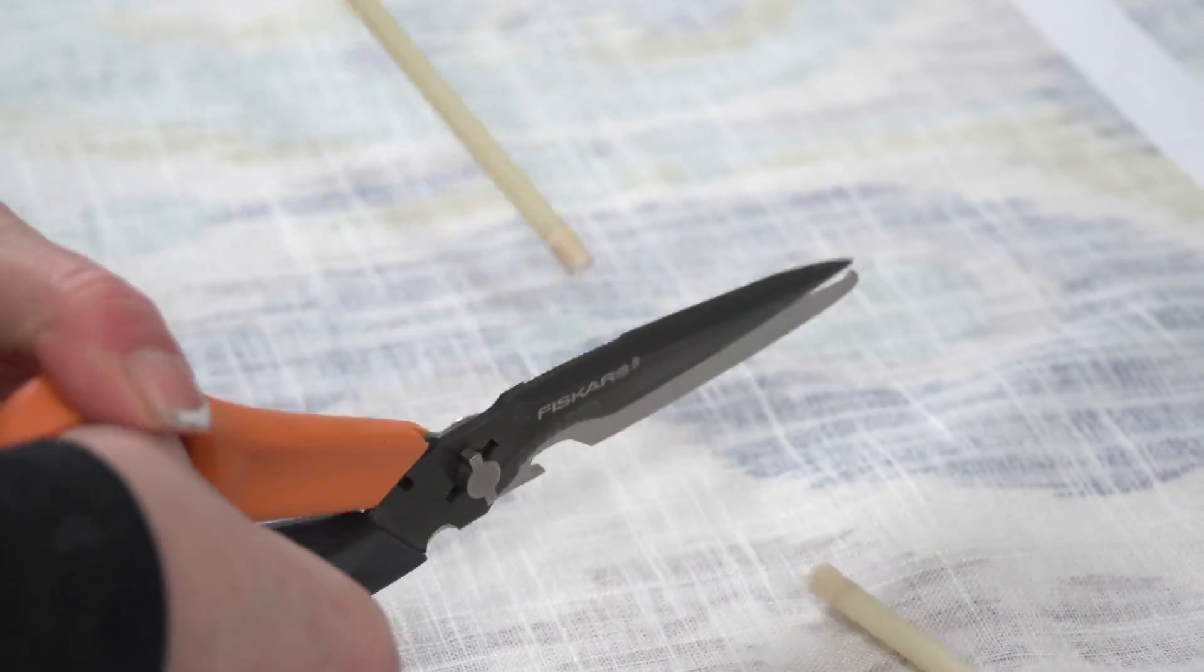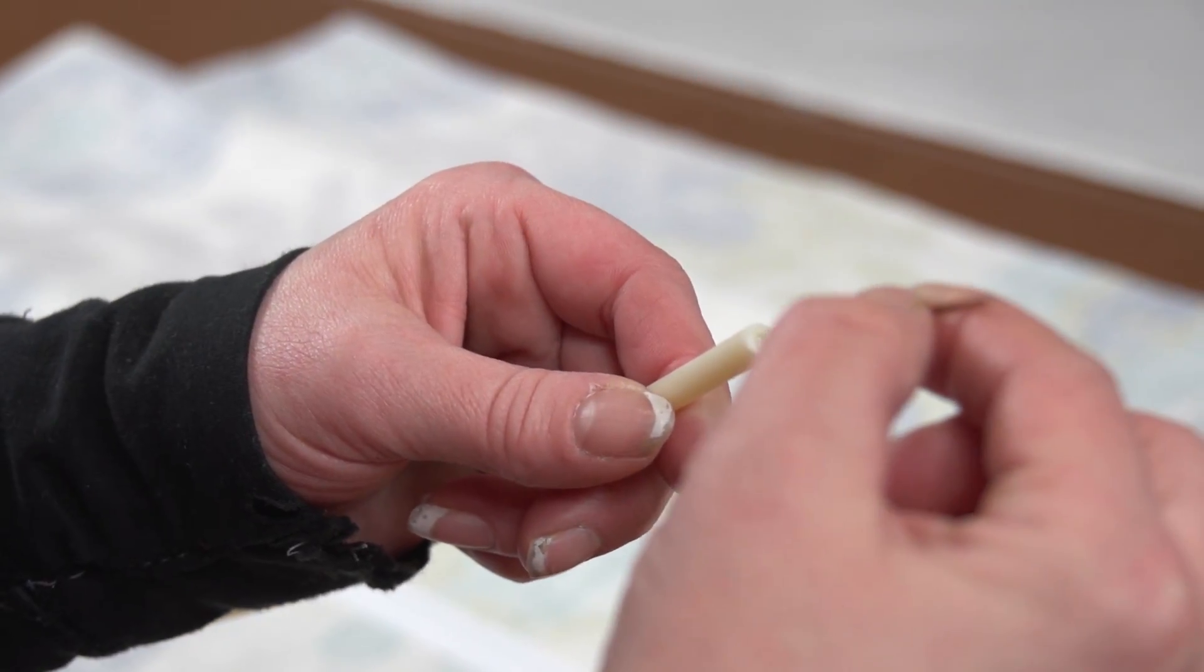Each rib is a quarter inch in diameter and 5 feet long. Ribs can be shortened with wire cutters or utility scissors.